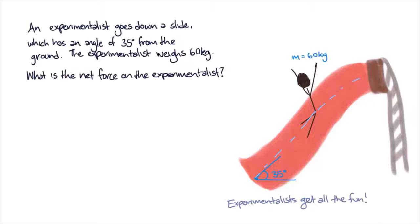So we know that from a stationary start, the experimentalist will slide down the slide. So we can already infer that the net force will point down the slide. But how? Well, let's consider the forces at work.